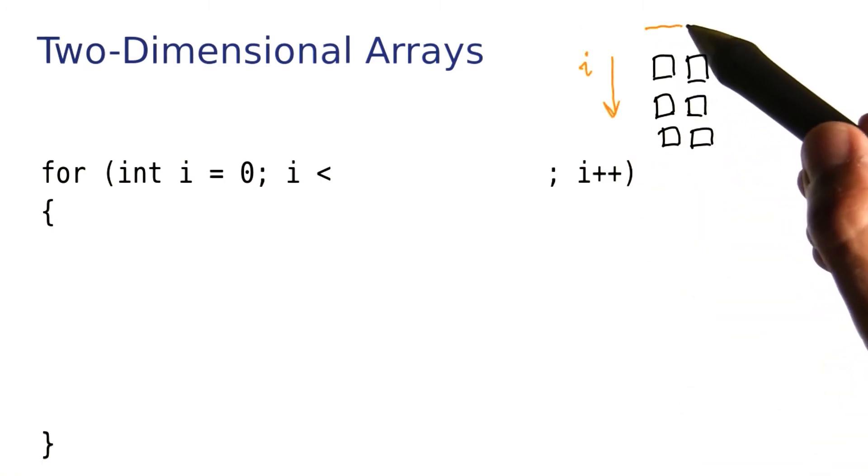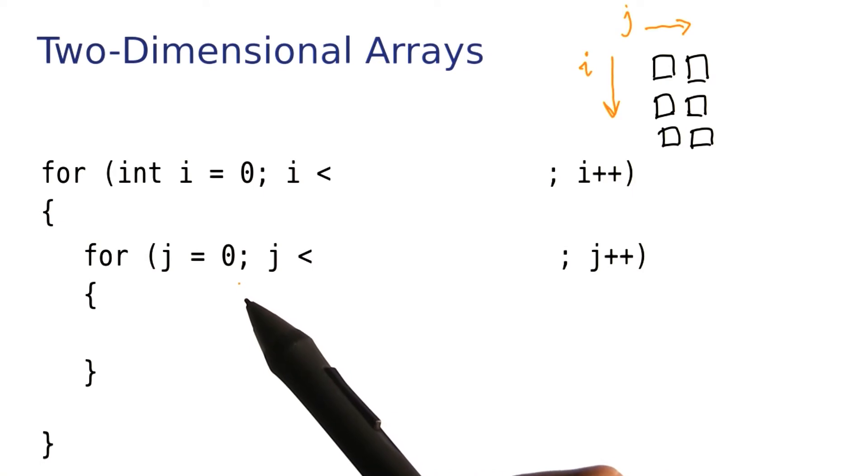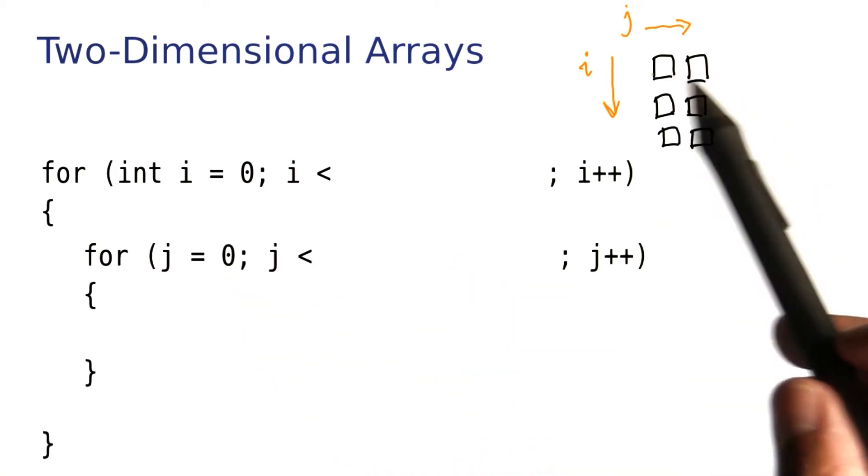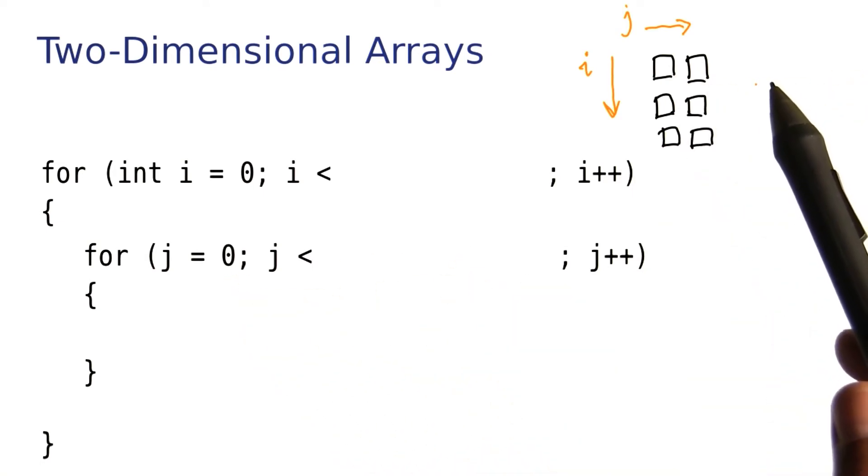Similarly, we'll have a column index j that in this example will go from 0 to 1. If you had more columns, of course it would go further.